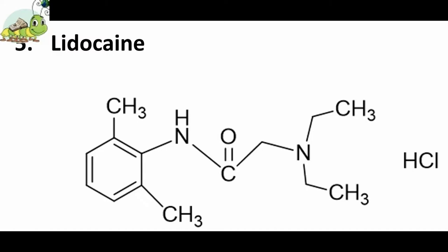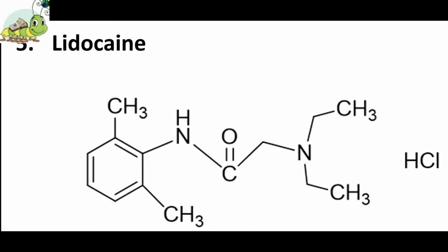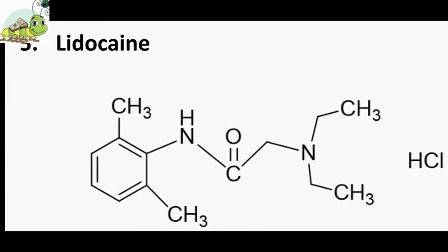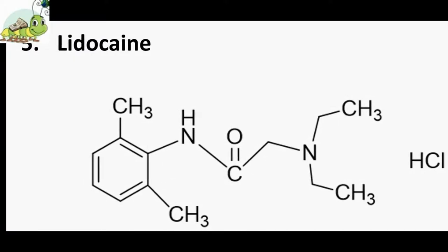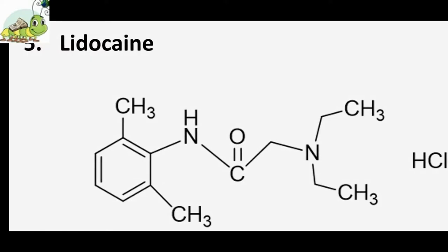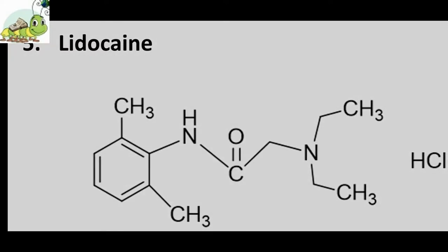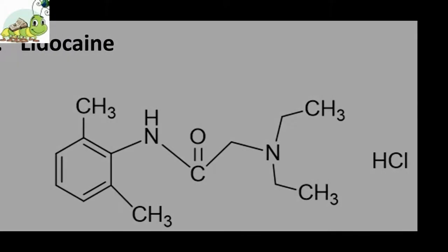The class 1b agents rapidly associate and dissociate from sodium channels. Thus, the actions of class 1b agents are manifested when the cardiac cell is depolarized or firing rapidly. Class 1b drugs are particularly useful in treating ventricular arrhythmias. Lidocaine was the drug of choice for emergency treatment of cardiac arrhythmias.